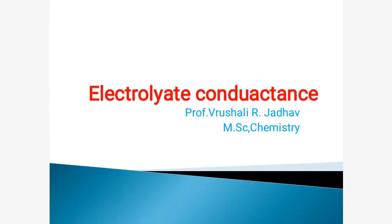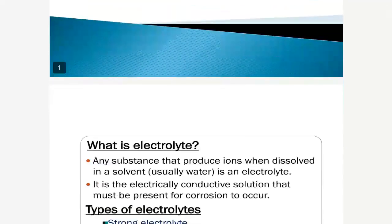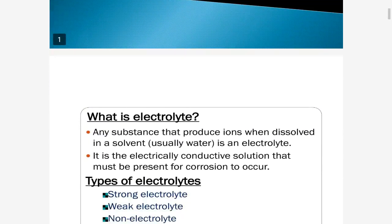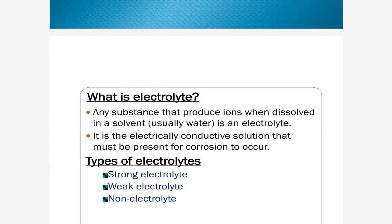Hi friends, I am Professor Rushali Zado. Today we discuss electrolyte conductance. Now, what is an electrolyte? Any substance that produces ions when dissolved in a solvent — the solvent is usually water — is an electrolyte. It is an electrically conductive solution that must be present for corrosion to occur.